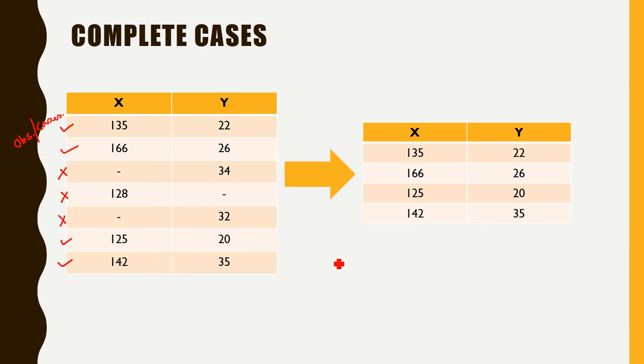So this won't restrict us from calculating any of the statistics such as mean, median, mode, or standard deviation. This is going to be 1/4 multiplied by 135 plus 166 plus 125 plus 142, and so this will give us actually a value, not an NA.